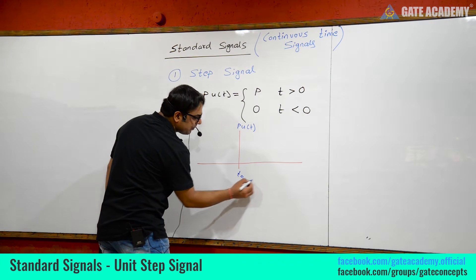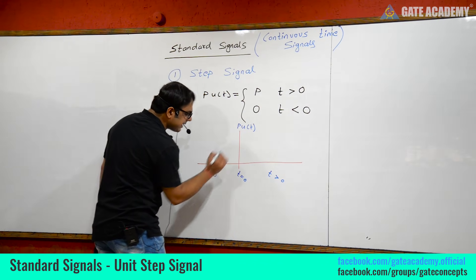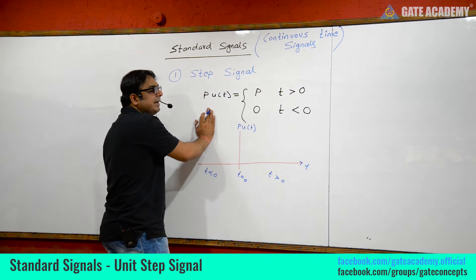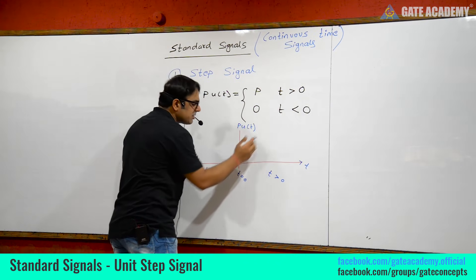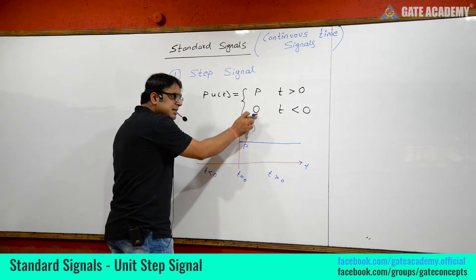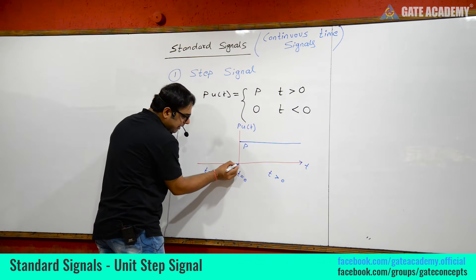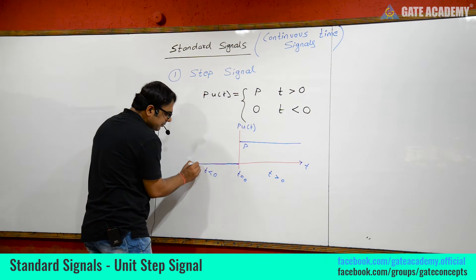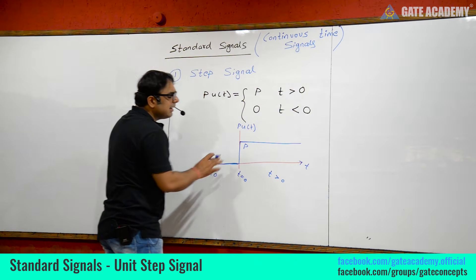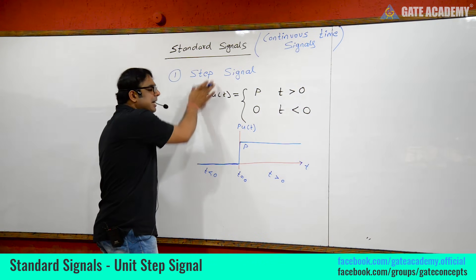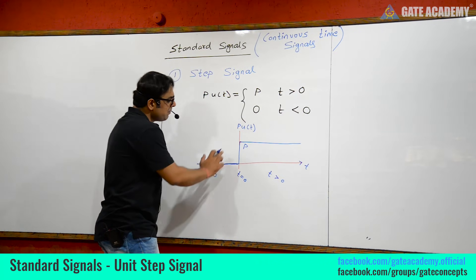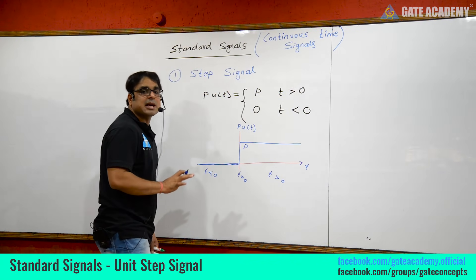At t equal to 0, for t greater than 0 (positive time), the signal is defined as the constant p, and for t less than 0 (negative time), the signal is equal to 0. This signal has the shape of a step — it steps up from 0 to p — and that is why this signal is called a step signal.